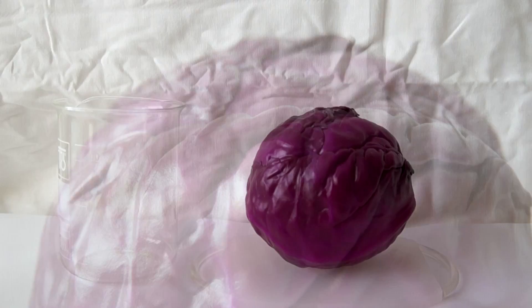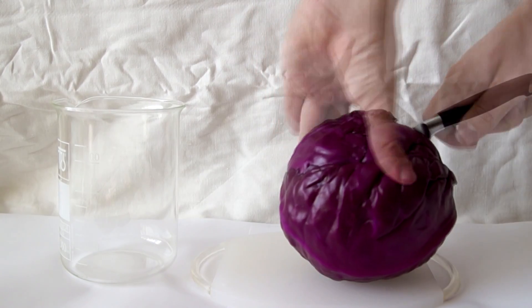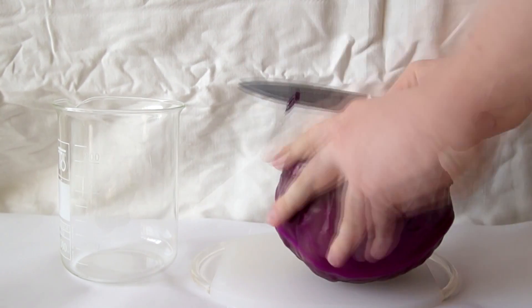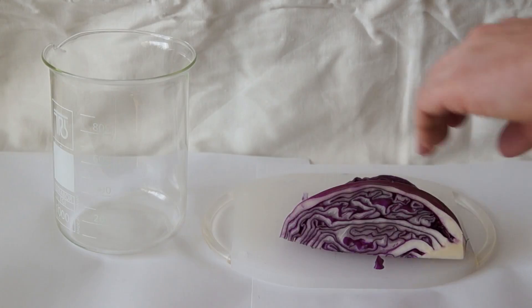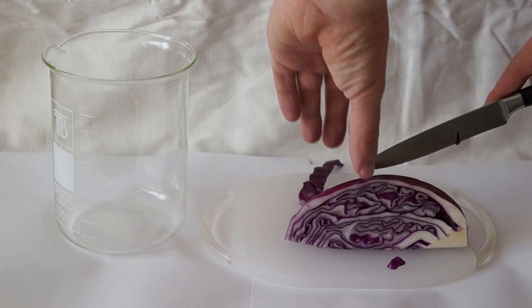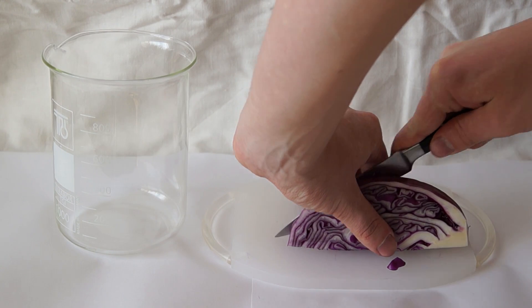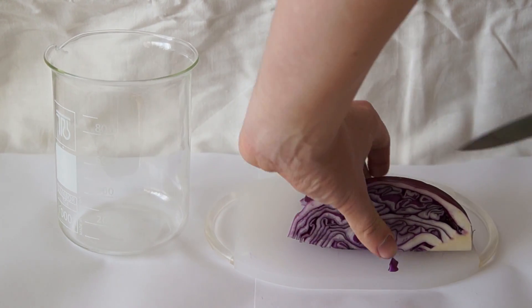First, we will need to buy the red cabbage. Then we need to cut it into about four parts. And for the experiment, one quarter should be enough. Afterwards, further chop the quarter piece into small pieces. The smaller the pieces, the better. You can also crush it using a blender.